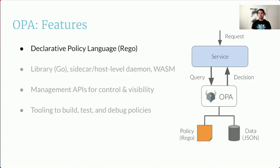Let's look at some of OPA's features. At the core of OPA is a high-level declarative language called Rego. With Rego, you can write policies which are more than just allowed or denied — your policies can be sets, objects, collection of values, strings, and so on. OPA can help you answer the question 'can Bob access a particular field?' and also 'which fields can Bob access?' So the policy decisions can be much more expressive using Rego.